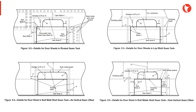Figures 9.2, 9.3, 9.4, and 9.5 of the API 653 are now shown on screen. These details indicate the different alternatives to locate access doors, reinforcements, and weld locations.